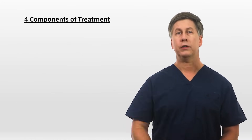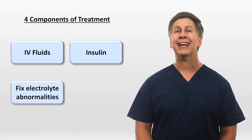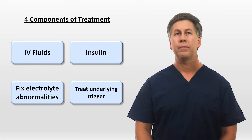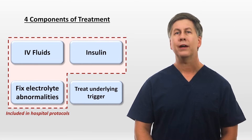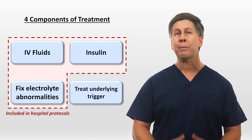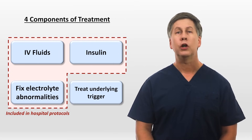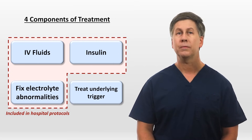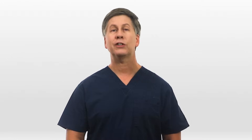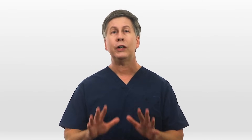The treatment of DKA has four primary components: IV fluids, insulin, fixing electrolyte abnormalities, and treating the underlying trigger. The first three are almost always part of a hospital-wide DKA protocol devised and approved by an interdisciplinary team of endocrinologists, critical care docs, hospitalists, nurses, and pharmacists. As a general rule, you should avoid altering hospital DKA protocols, as they have been created specifically by people who know and understand DKA better than you do, and who know and understand workflows in your specific hospital better. However, there are a few situations in which you may need to alter them, which is why I'm going to go through what's typically included in the protocols.